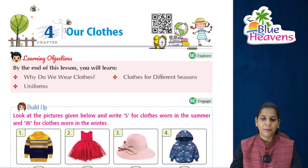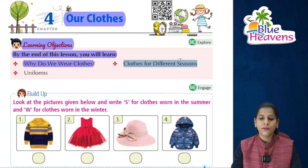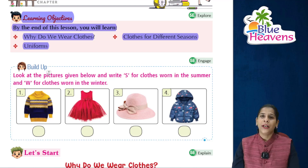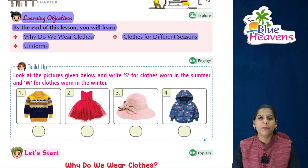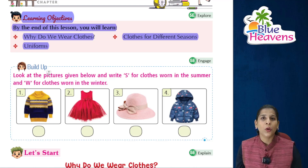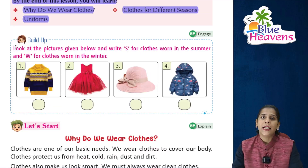Chapter 4: Our Clothes. Learning objectives — by the end of this lesson you will learn: why do we wear clothes, clothes for different seasons, and uniforms. In this chapter we will learn about different seasons and when we wear uniforms. Before starting the chapter, we have to do a small activity.